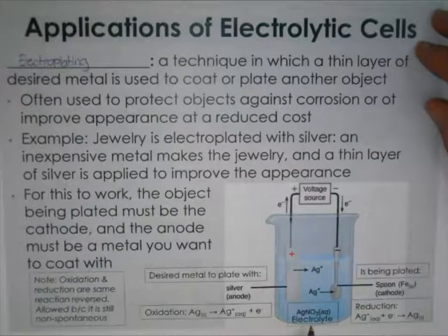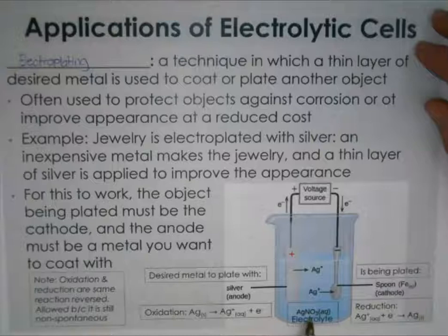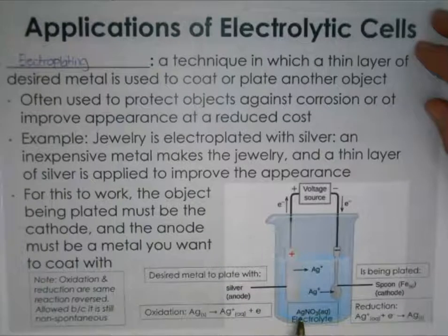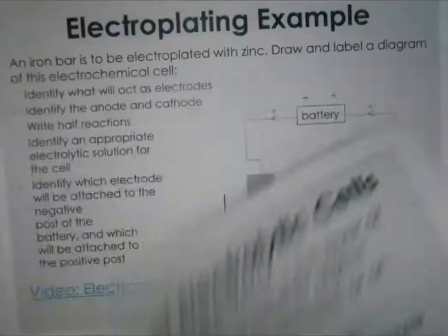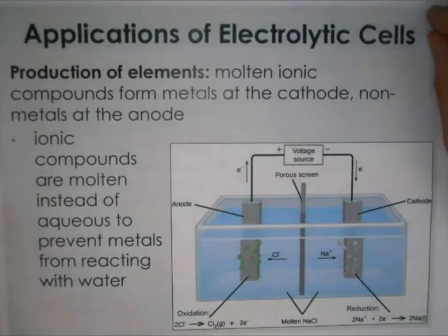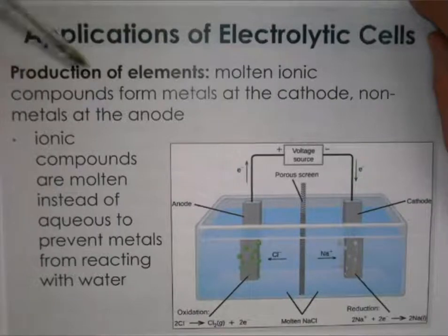For electroplating questions, you'll often be asked to identify the electrolyte in solution. The recommendation is to take whatever metal you're working with and combine it with nitrate, because nitrate is a non-reactive, soluble ion that forms soluble compounds. So if asked to come up with an appropriate electrolyte solution for plating, just combine your metal with nitrate as the ionic compound. Another application is production of elements, where instead of a solution you have molten ionic compounds that form the desired substance at the cathode and non-metals at the anode.